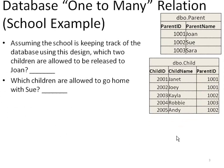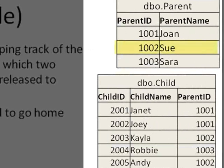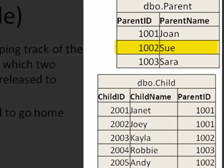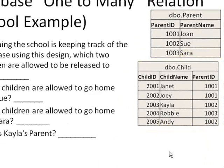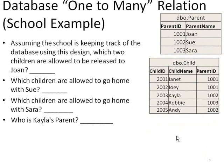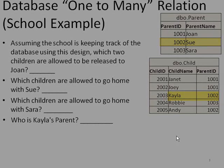So which children are allowed to go home with Sue? Sue is 1002. I see two instances: Kayla and Andy. Which children are allowed to go home with Sarah? Looks like Sarah has only one child, Robbie. So who is Kayla's parent? Kayla is 2003. Her parent is 1002. Looking up at the other table, that answer is Sue.